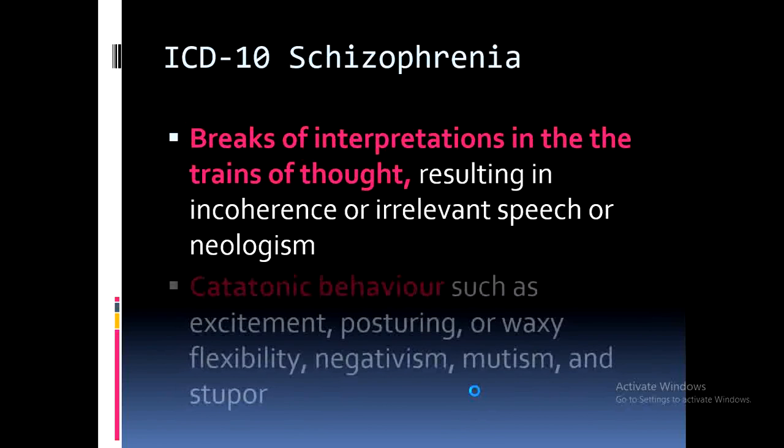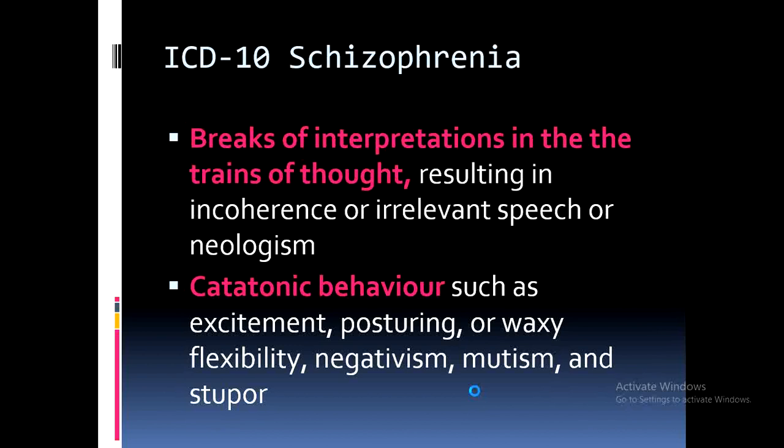Sometimes the person is speaking but it is incoherent — they appear to be murmuring and no meaning can be extracted from the speech. Then there is catatonic behavior such as excitement, posturing, waxy flexibility, negativism, mutism, and stupor. Posturing is when someone maintains a certain physical posture for hours and hours, perhaps staring at unseen objects in the sky, persisting until they are exhausted.